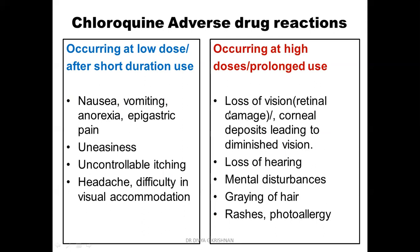Regarding loss of vision, it is mainly retinal damage being referred to; some corneal deposits can also lead to diminished vision. Prolonged use occurs mainly in the non-infectious uses of chloroquine, and all these ADRs can develop. A useful mnemonic is to imagine an old person — loss of vision, loss of hearing, mental disturbances, graying of hair — to remember the ADRs of prolonged chloroquine use.